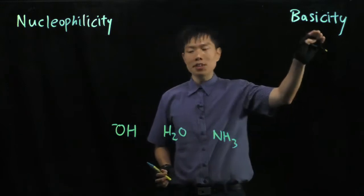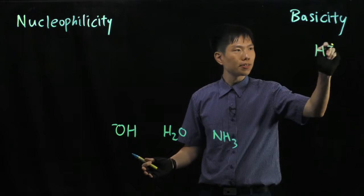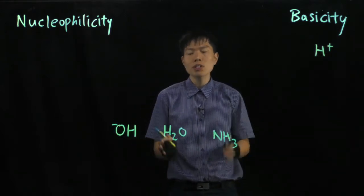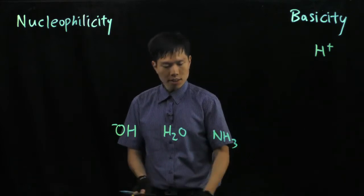Let's start with basicity first, that means the ability for them to attract an H+ ion. Now when we are asked to compare three different species or more than that, we have to dissect them and compare group by group. So now let's group them.